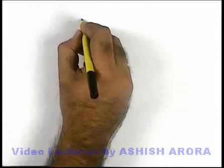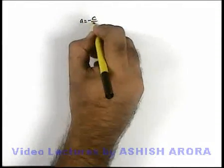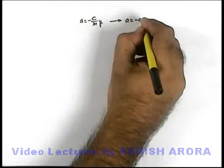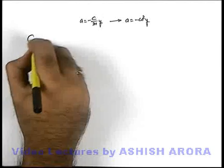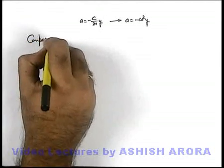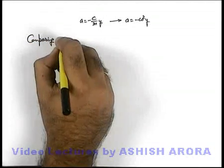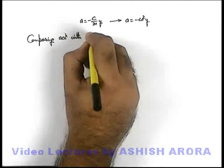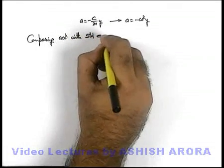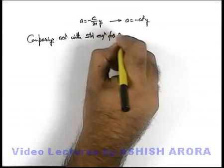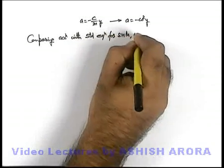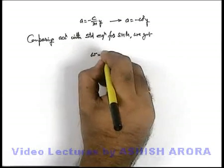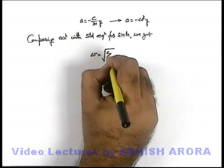So if we compare a equals minus c by m times y with a equals minus omega squared y, comparing acceleration with the standard equation for SHM, we get the angular frequency of oscillation equals the square root of c by m.